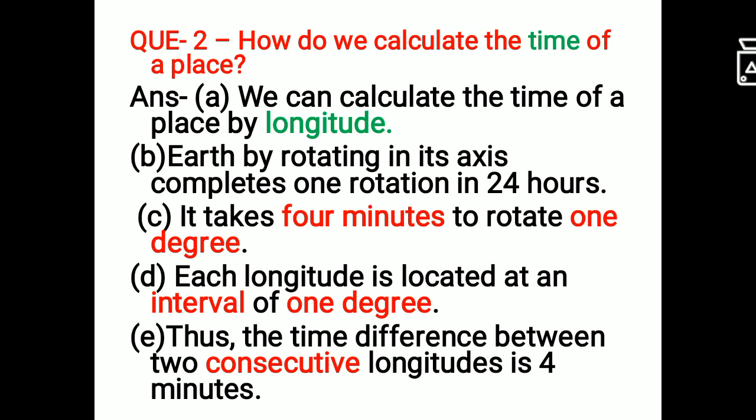We can calculate the time of a place by longitude. Earth by rotating in its axis completes one rotation in 24 hours. You all know one rotation is completed in 24 hours.